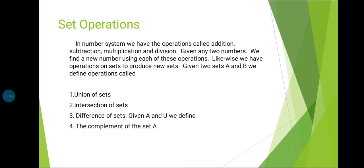Given two sets A and B, we define the operations called: first, union of sets; second, intersection of sets; third, difference of sets. Given A and U — U meaning universal — we define the fourth one: the complement of set A.